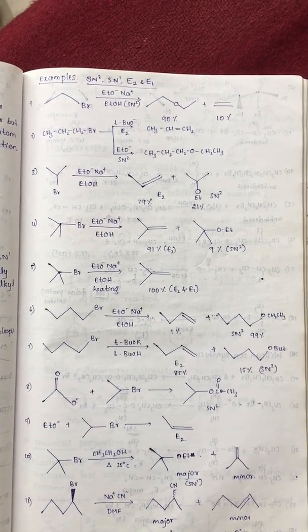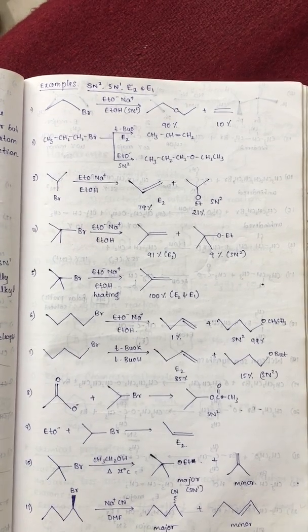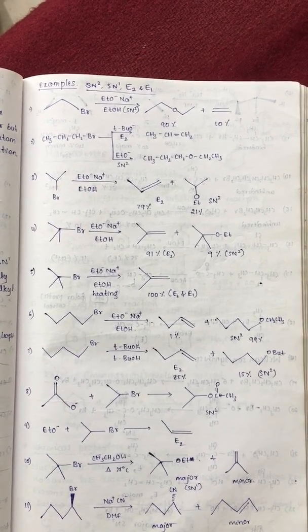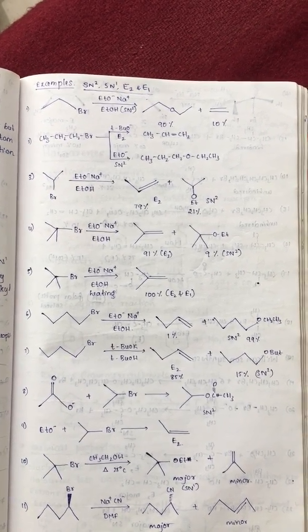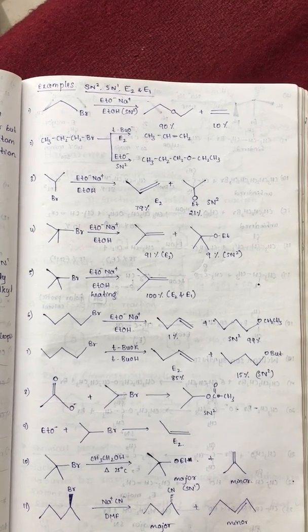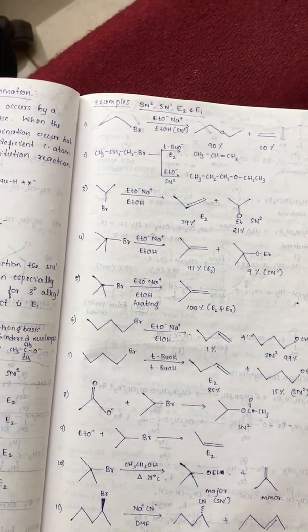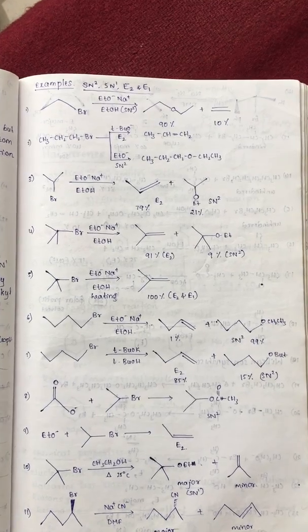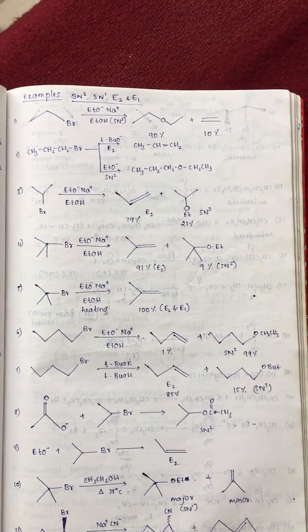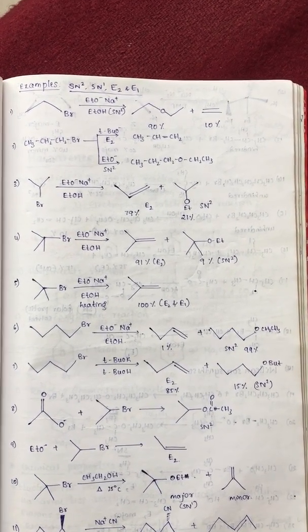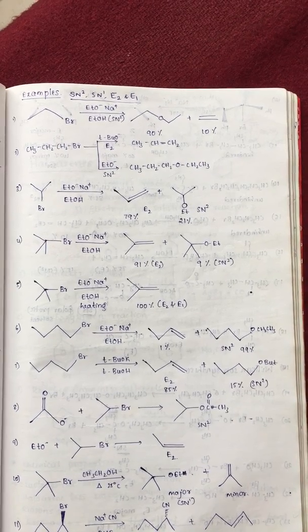Ethyl bromide reacts with sodium ethoxide in presence of ethyl alcohol is SN2 reaction. Therefore, it forms ether as a major product than the alkene.